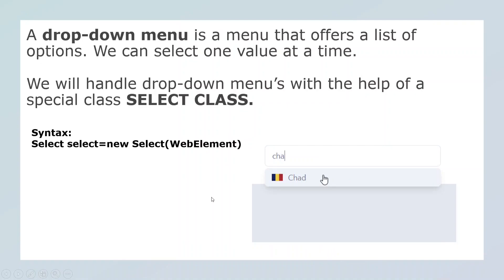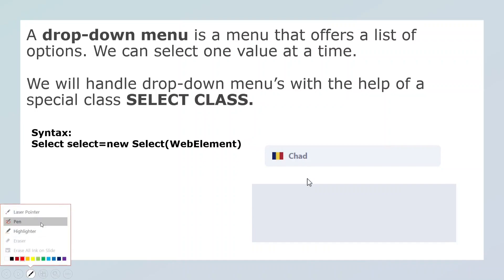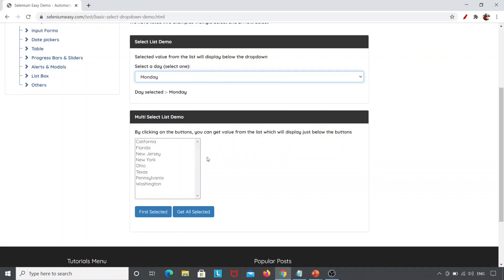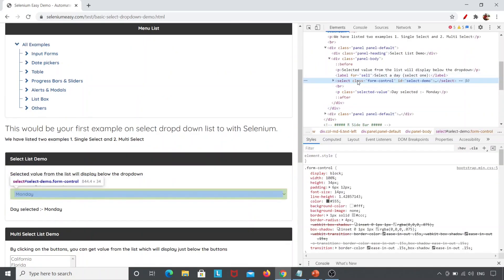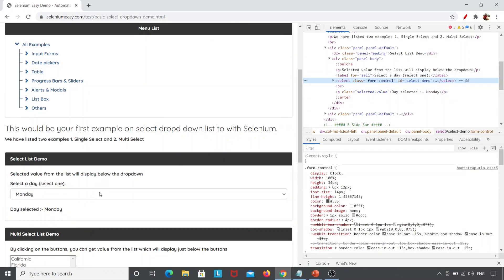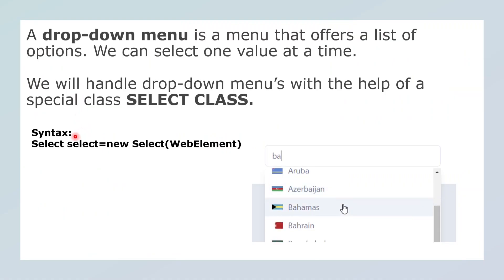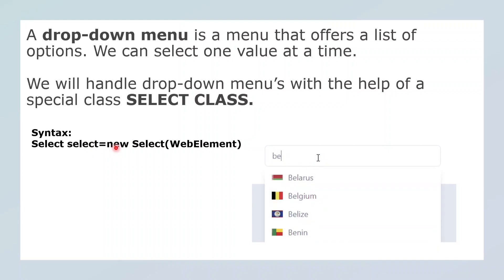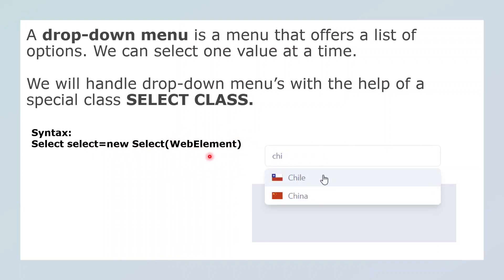Now we will handle the dropdown menus with the help of a special class called the Select class. When I inspect this element, I can see the select tag. That is the reason why, to select values in this dropdown menu, I'll be using the Select class. The basic syntax of the Select class is: Select selectElement = new Select(webElement). So this is the syntax of the Select class.